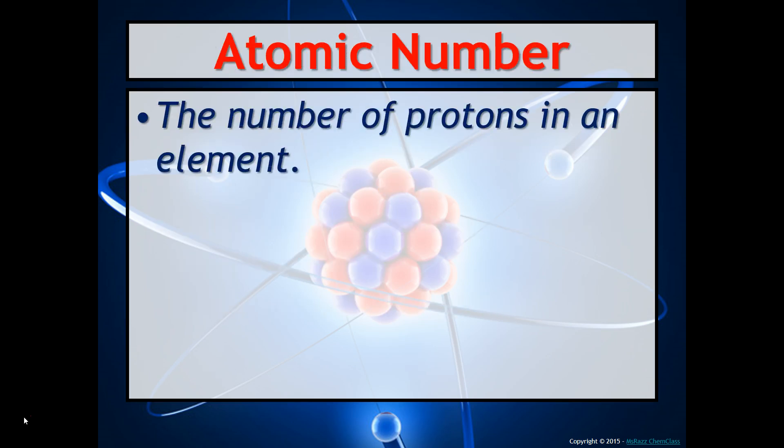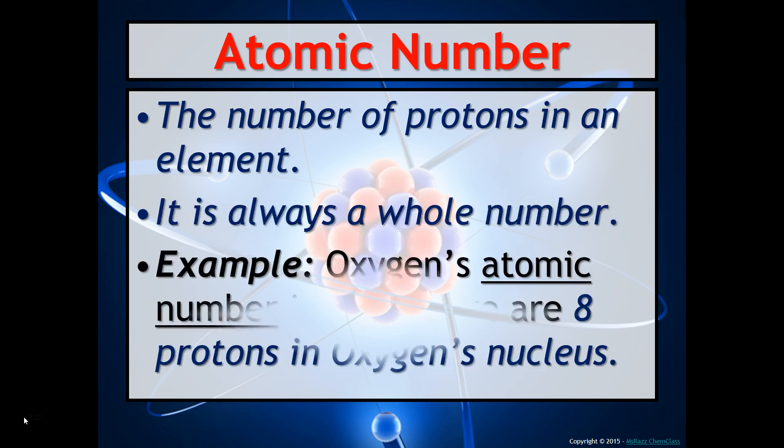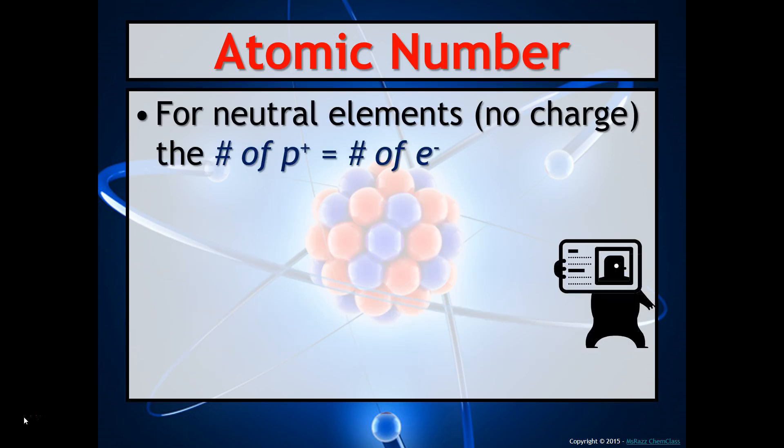Atomic number is the number of protons in an element. It is always a whole number. For example, oxygen's atomic number is 8, so therefore there are 8 protons in oxygen's nucleus. For neutral elements — elements that have no charge — the number of protons equals the number of electrons. The number of positive things has to equal the number of negative things.